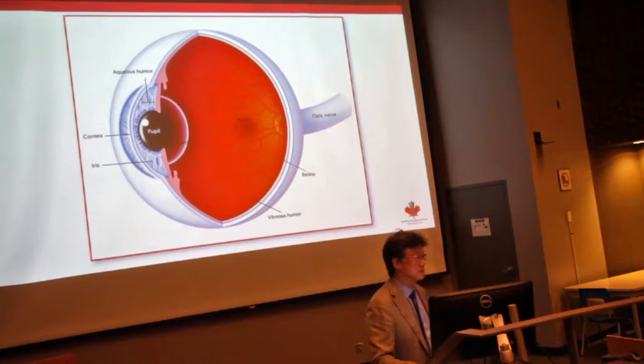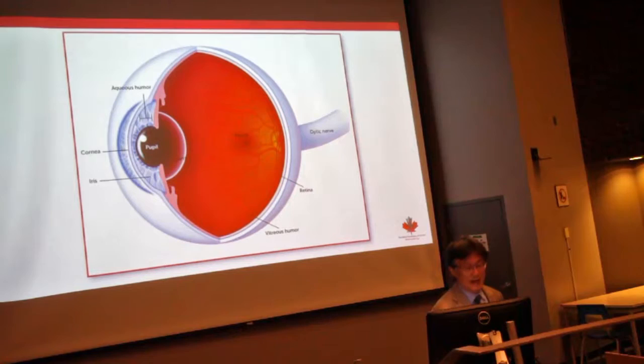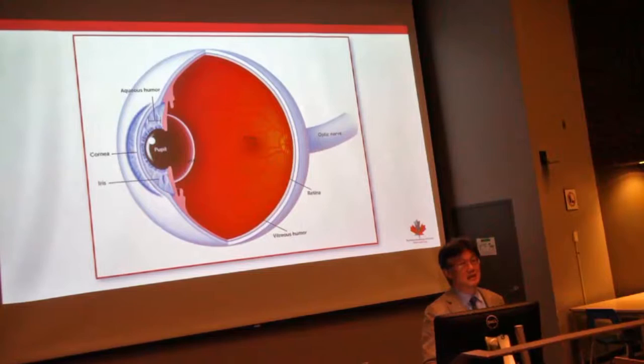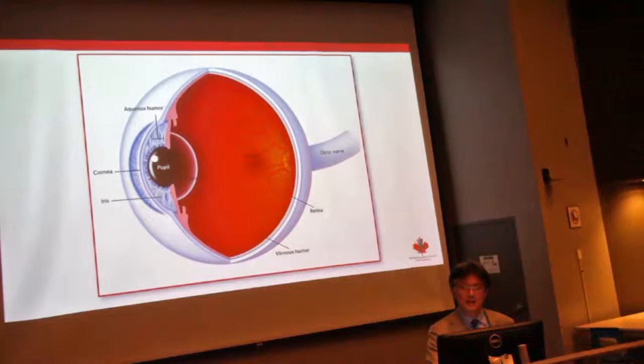Before we talk about the actual diseases, maybe I can talk about the eye in general, because everybody needs to get oriented. When we talk about disease states, if you don't know about normal anatomy, it will be a little more difficult to understand. So this is — everybody recognize this organ — it is the eye.